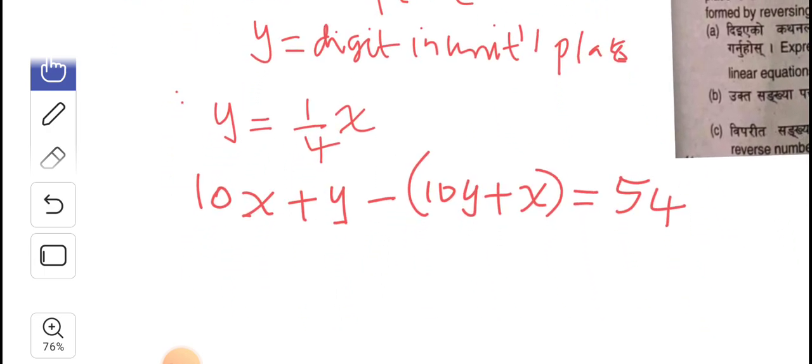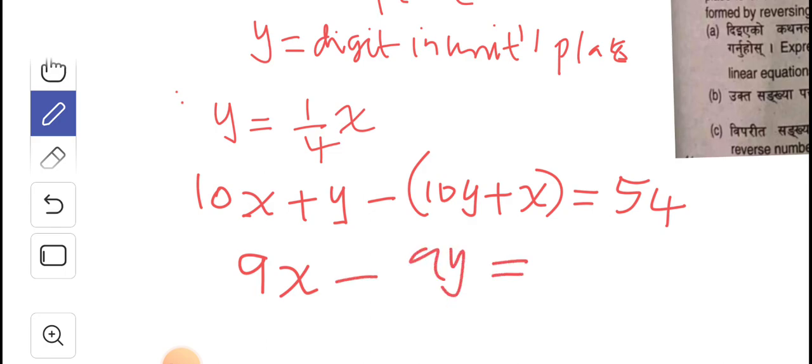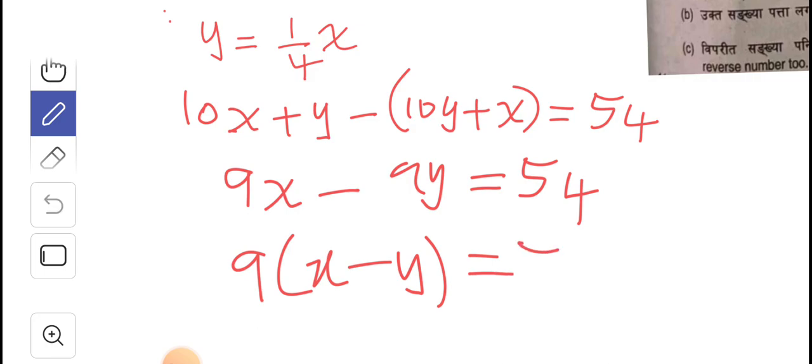And then we simplify this. And we proceed as follows. So you'll have 10x minus x, which is 9x, minus y minus 10y is exactly minus 9y equals 54. And from this, we factorize. Factor out 9 is the common factor. We have x minus y equals 54.